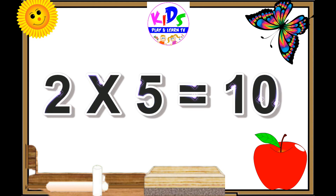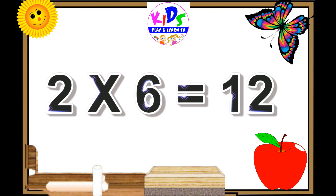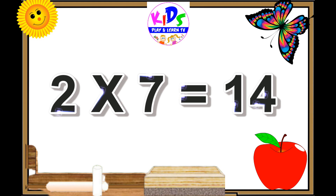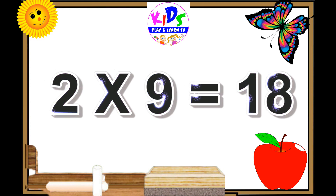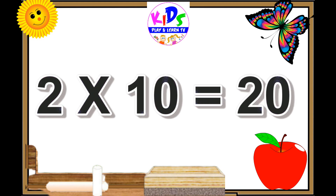Two fives are ten, two sixes are twelve, two sevens are fourteen, two eights are sixteen, two nines are eighteen, two tens are twenty.